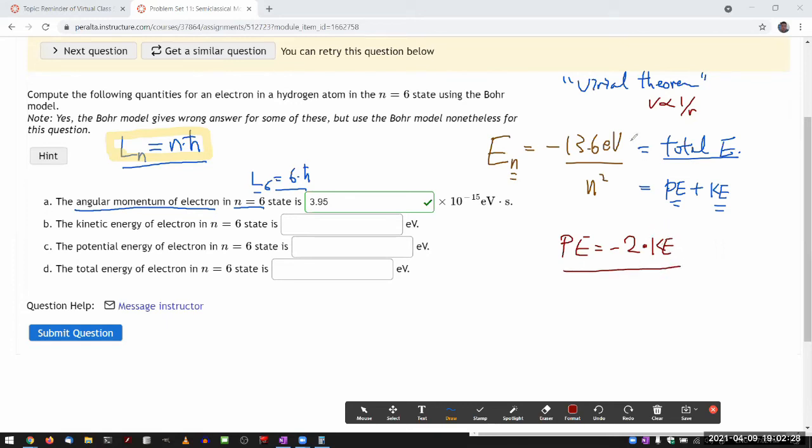As an example, for n equals one state, potential energy will be equal to minus double of this, so minus 27.2 eV. I remember this minus sign by remembering that my kinetic energy is always positive. My kinetic energy for n equals one state is going to be half of this but with a plus sign, plus 13.6 eV. When you add these two together, you get minus 13.6 eV that you are expecting.